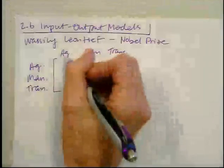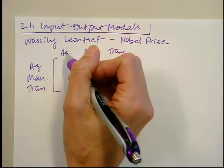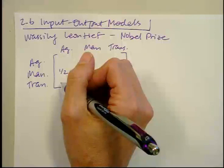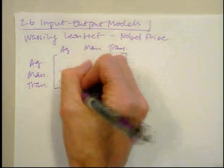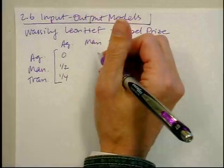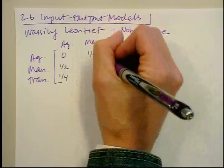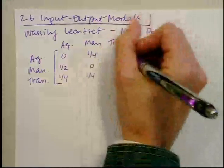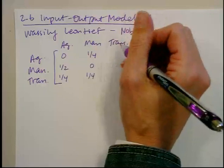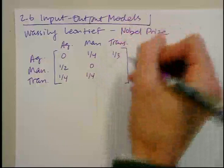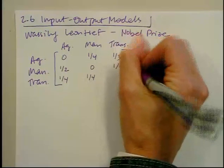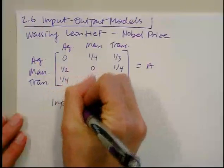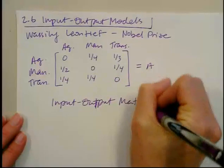Here's how I put this together. To produce one unit of agriculture, it requires half a unit of manufacturing and one quarter of a unit of transportation — so zero units of agriculture itself. Production of one unit of manufacturing requires a quarter unit of agriculture and a quarter unit of transportation, so zero manufacturing. To produce one unit of transportation, it takes a third of a unit of agriculture and a quarter unit of manufacturing. This is our input-output matrix, A.